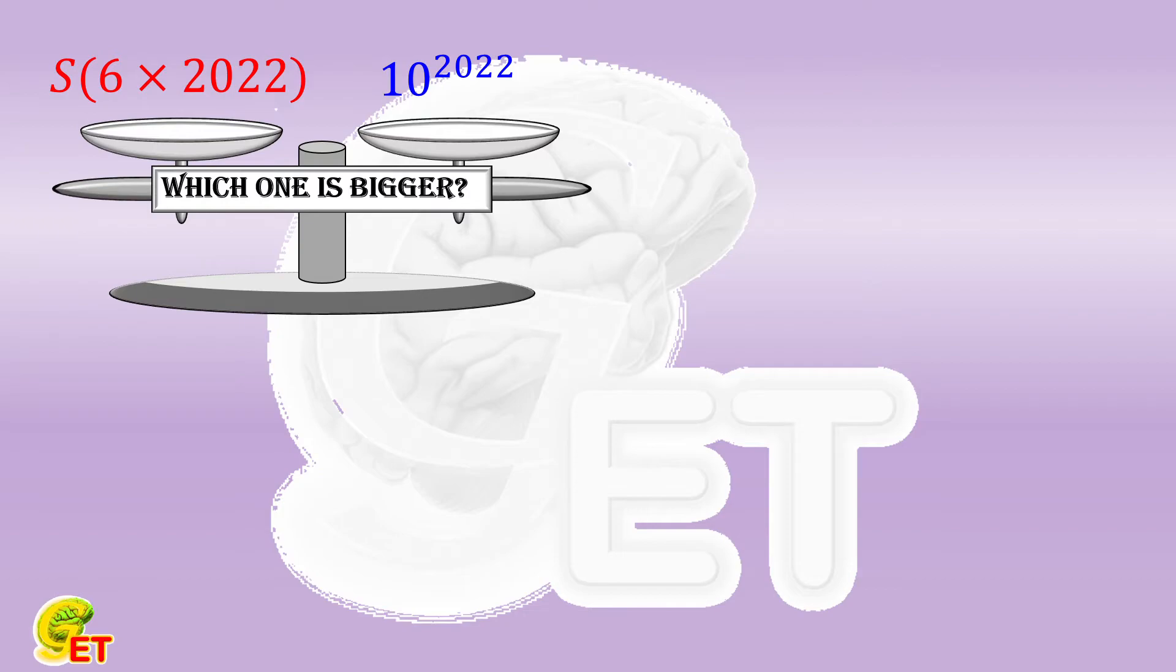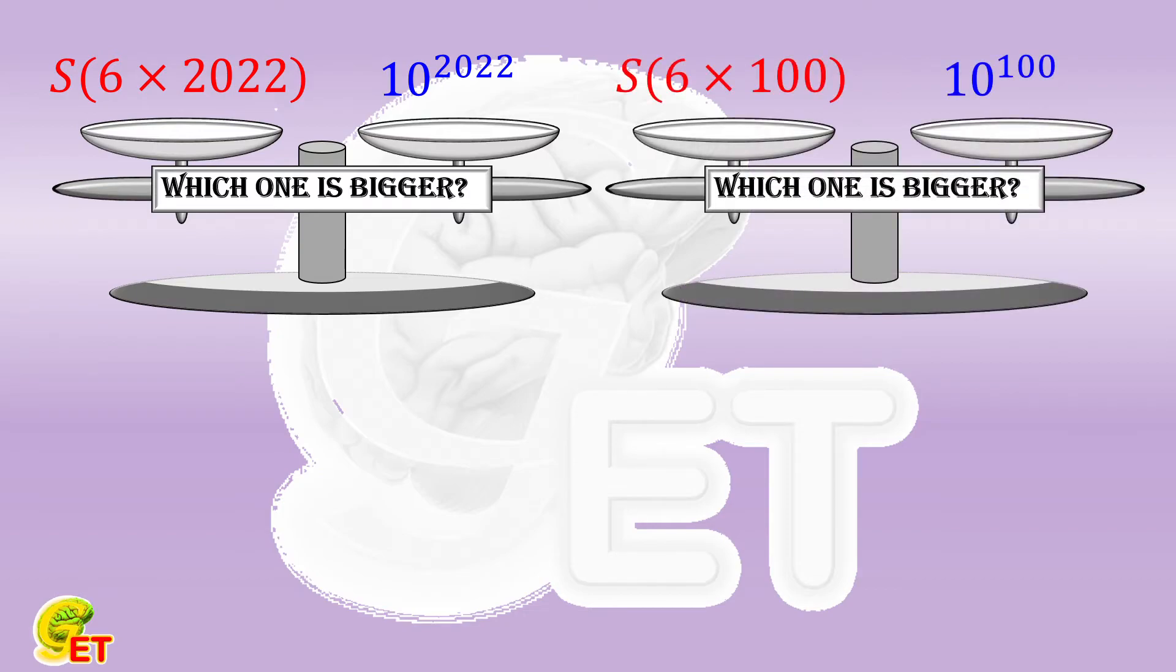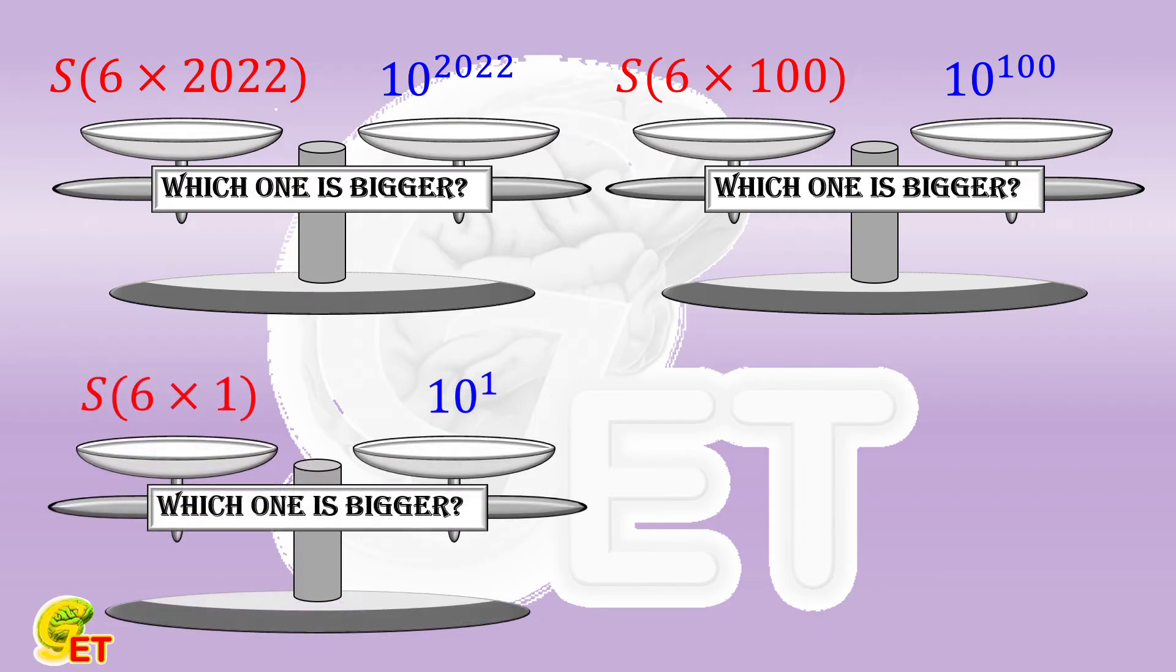For instance, if we want to know which is bigger between S of 6 times 100 and 10 to the 100th power, or in a more extreme case, which one is bigger between S of 6 times 1 and 10 to the first power? Well, we have already had the answer of this. Since S of 6 is equal to 13, it is bigger than 10.